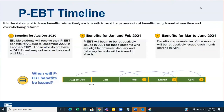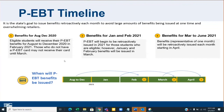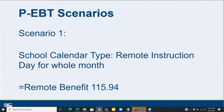Regarding the PEBT timeline: benefits for August through December will be issued to eligible students in February. PEBT for January and February will be issued in March. Then, beginning in April, benefits for one representative month will be retroactively issued each month going forward. I now want to walk through a few scenarios to show how this is processed.